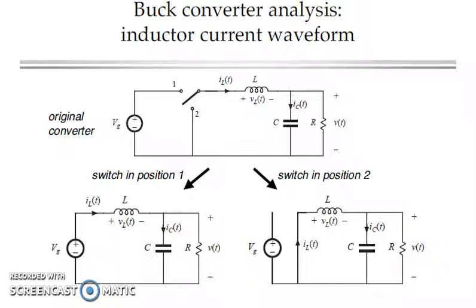First, let's look at the circuit. This is the circuit of a buck converter. We will have a source and a load here and our objective is to reduce the voltage from the source to the load.